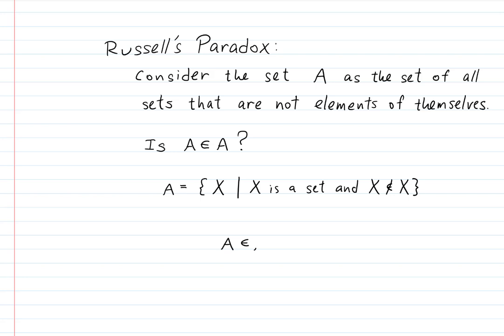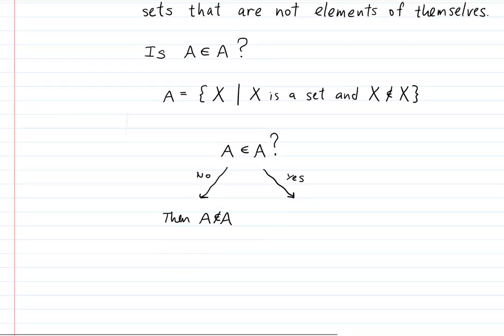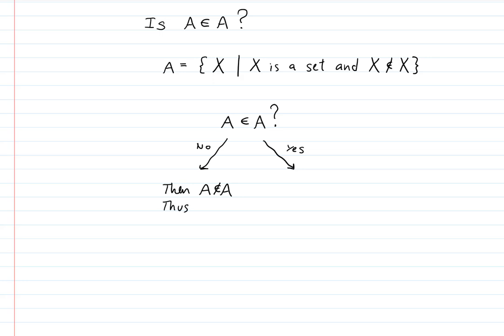Let's discuss whether A is an element of A. Suppose no — that means A is not an element of itself. But what is A? It's the set of all sets that aren't elements of themselves. So if A is a set and A is not an element of itself, then A is one of the sets in A. And there we have a logical contradiction.